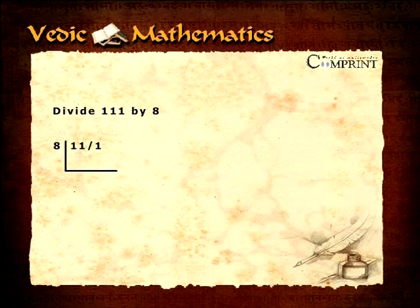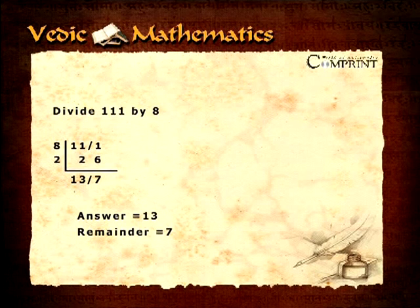The complement of the divisor 2 is written below the 8. The first coefficient digit 1 is multiplied by the complement 2 and the answer is placed below the next dividend digit. This second column is added up, that is 1 plus 2 equals 3, and the answer is the next coefficient. The new coefficient digit 3 is multiplied by the complement 2 giving 6 which is placed in the next column. The reminder column is then added up and the answer is 13, reminder being 7.